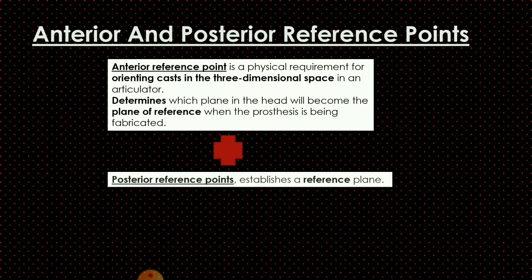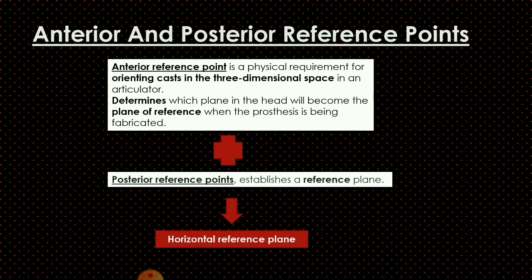The anterior and posterior reference points together form the horizontal reference plane. The occlusion we rehabilitate in the patient will be parallel to this horizontal reference plane. For example, when marking the ala-tragus line, the posterior reference point is the tragus and the anterior reference point is the ala of the nose. Posterior reference points are always two in number — one on each side — whereas the anterior reference point is single.